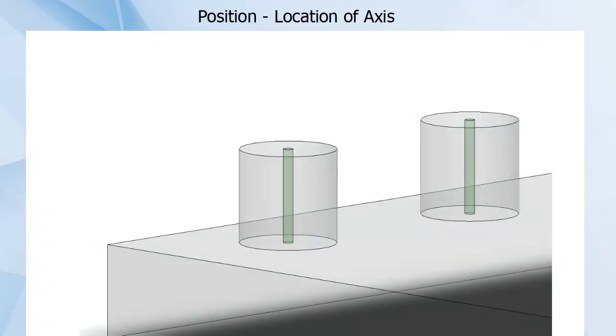Here's the close-up of those two pins. The part has been made translucent and the tolerance zones shown in green. If the part were made perfectly, the axis of each pin would fall perfectly down the center of the tolerance zones.